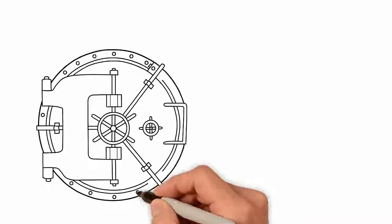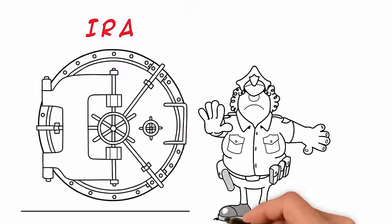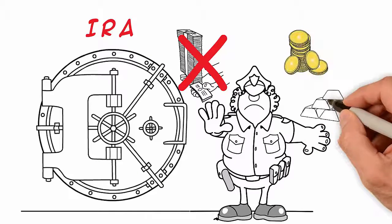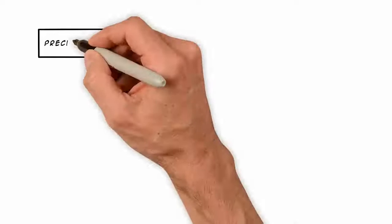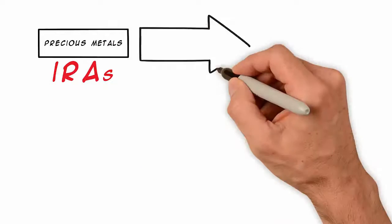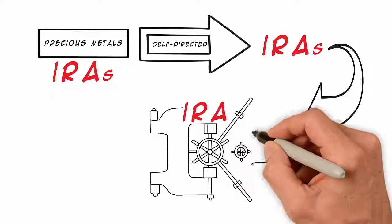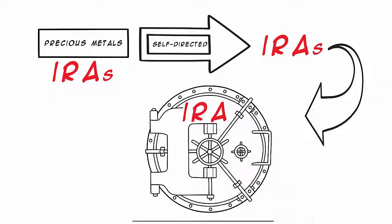It functions the same as a regular IRA, only instead of holding paper assets, it holds physical bullion coins or bars. Precious metals IRAs are usually self-directed IRAs, a type of IRA where the custodian allows more diverse investments to be held in the account.